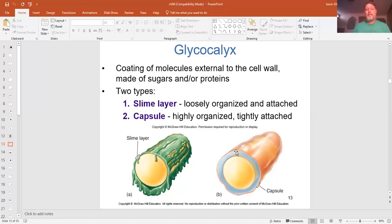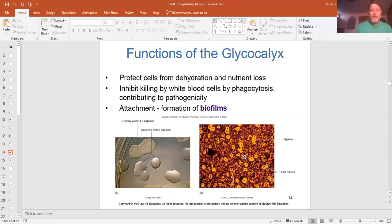The glycocalyx is a sugary layer, glyco for glycogen, that surrounds the cell. If it's not very organized, we call it a slime layer. If it is very organized, you see it's more thick, it's thicker, more organized, and we call it a capsule. And these help prevent from drying out or from being phagocytized by white blood cells even.